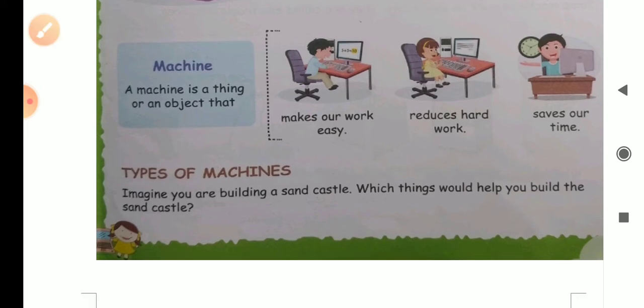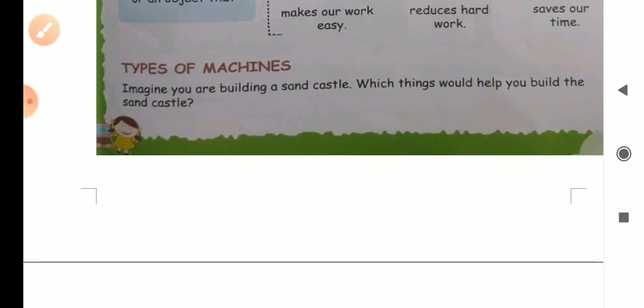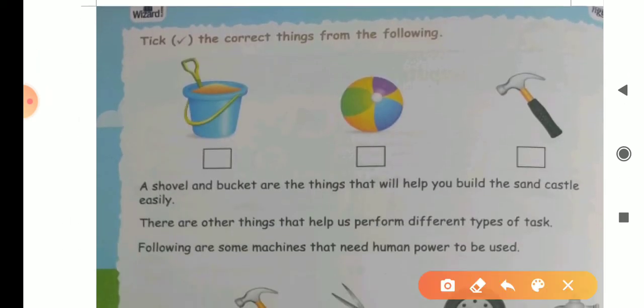Type of machines. Imagine you are building a sandcastle and which thing would help you build the sandcastle? Take the correct thing from the following. A ball? No. A hammer? No. A bucket that has sand. Yes dear. A shovel and a bucket are the thing that will help you build the sandcastle.